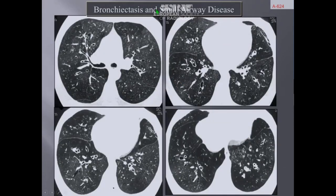Beyond the large airways, the radiologist has to look at the lung parenchyma because many patients with bronchiectasis also have small airway disease. Detection of small airway disease consists of detecting areas of hypoattenuation containing few vessels of small dimensions compared to normal areas. The combination of hyperattenuated and hypoattenuated areas is called mosaic attenuation, and because there is hypoperfusion responsible for the hypoattenuation, it is called mosaic perfusion.